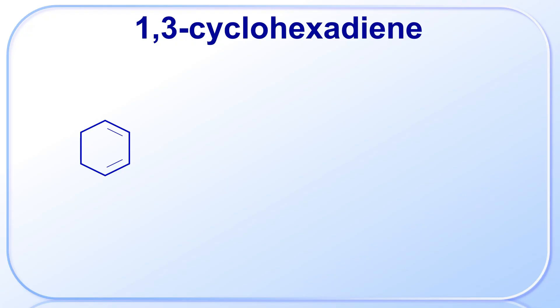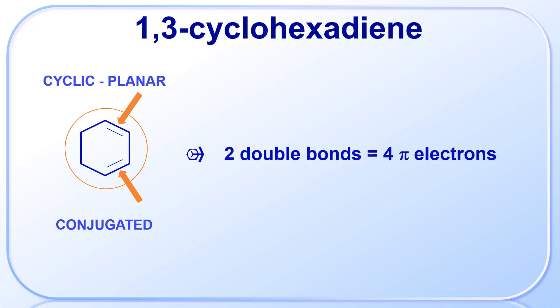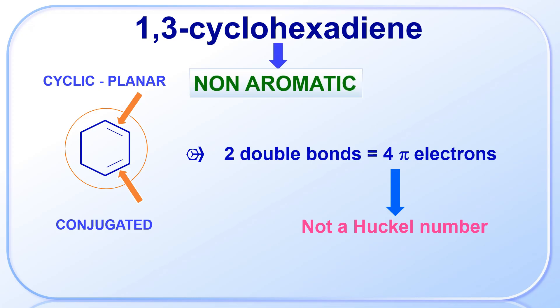Now look at this molecule, 1,3-cyclohexadiene. It is a six-membered cyclic and planar molecule, like benzene. However, it has only two alternate double bonds that are in conjugation. The number of pi-electrons is 4, which is not a Hückel number. Therefore, it is non-aromatic.